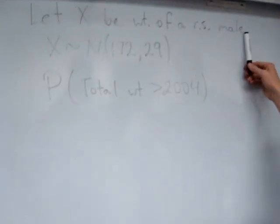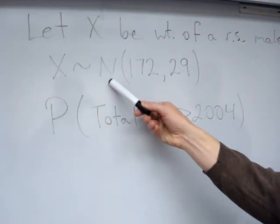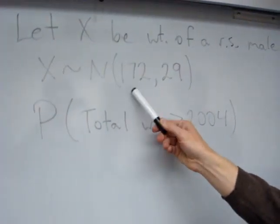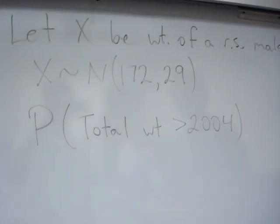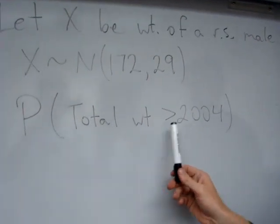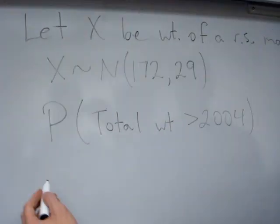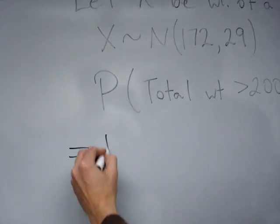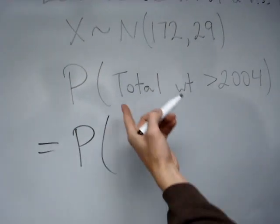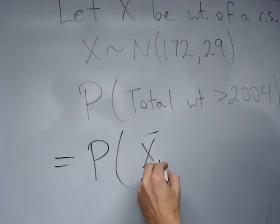So if X is the weight of a randomly selected male, and we know from the problem that X is distributed as normal random variable with mean 172 and standard deviation of 29, what we're trying to find is the probability that the total weight is greater than 2,004. This is the same as the probability, if I just divide each of these by 12, the total divided by 12 is just the average, x-bar 12.